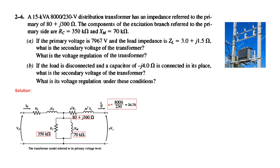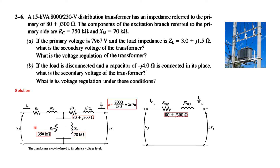What the problem is saying is that the impedance referred to the primary side — the secondary impedance referred to the primary — is 80 + j300. R_C and X_m are also given. From this we can also calculate the transformer turns ratio A, which is the ratio of primary voltage over secondary voltage, giving A = 34.78. Now, as we mentioned, we can neglect the excitation branch, so our circuit will simply be the simplified series equivalent circuit.